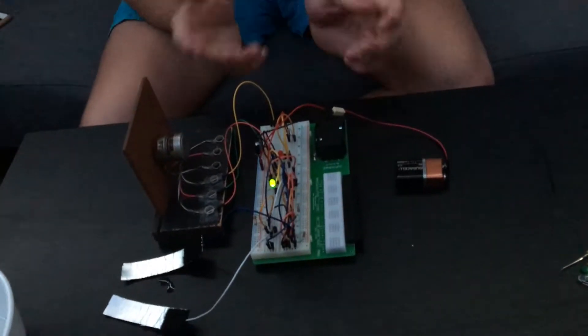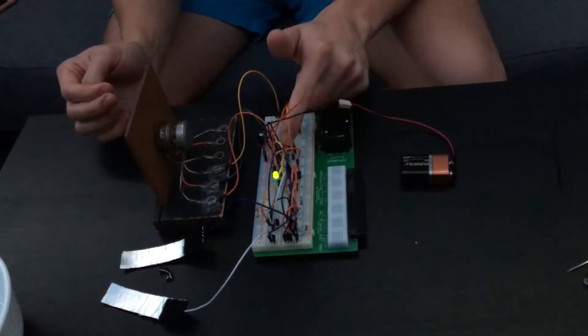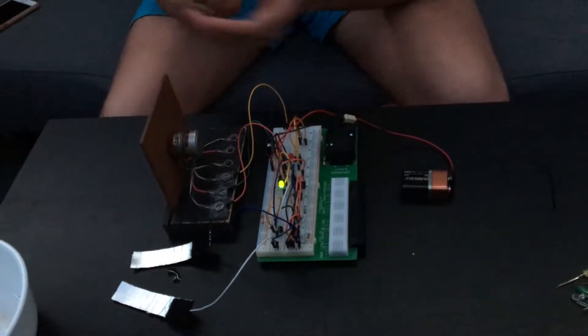When you lie you supposedly sweat more, which will cause the circuit to light up this red diode showing that it's a lie rather than this green diode.